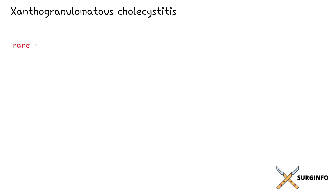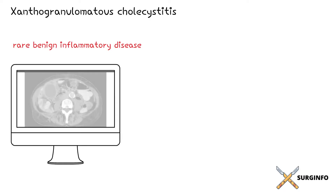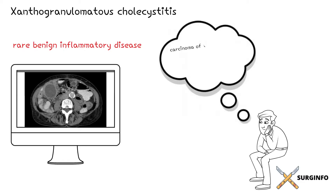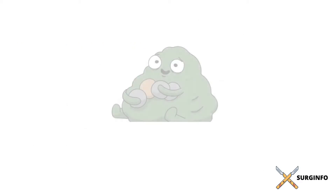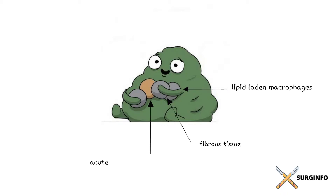Xanthogranulomatous cholecystitis is a rare benign inflammatory disease of the gallbladder that may be misdiagnosed as carcinoma of the gallbladder on imaging. It is characterized by a focal or diffuse destructive inflammatory process, with accumulation of lipid-laden macrophages, fibrous tissue, and acute and chronic inflammatory cells.